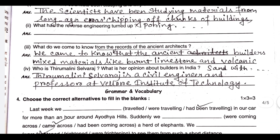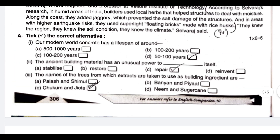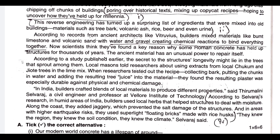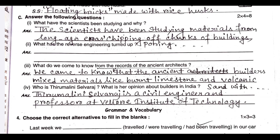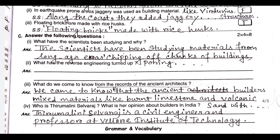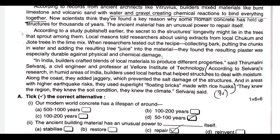What do we come to know from the records of the ancient architects? We came to know that the ancient builders mixed materials like burnt limestone and volcanic sand with water and gravel, creating chemical reactions to bind everything together. Who is Thiru Malini Selvaraj? She is a civil engineer and professor at Vellore Institute of Technology. According to her, in humid areas of India, builders used local herbs that helped structures deal with moisture.